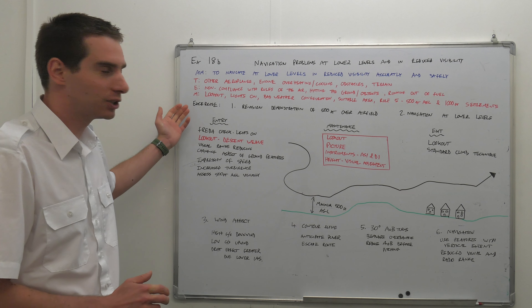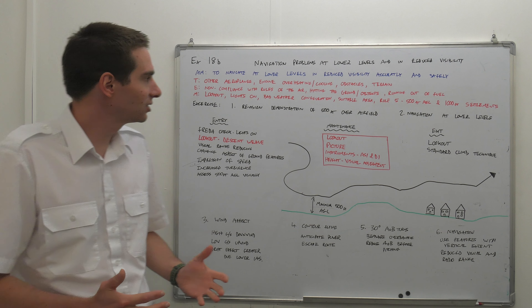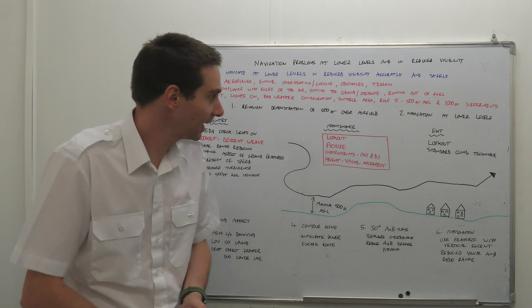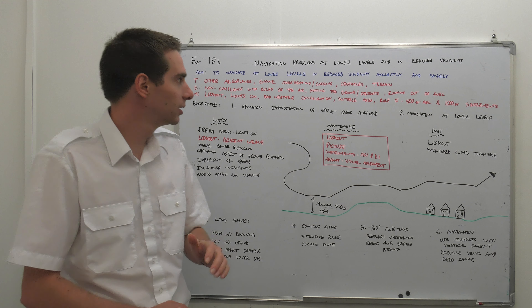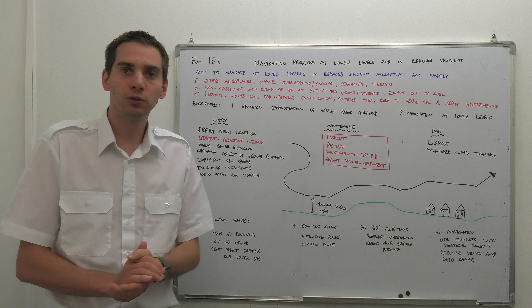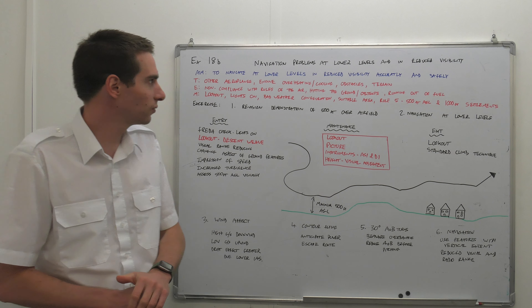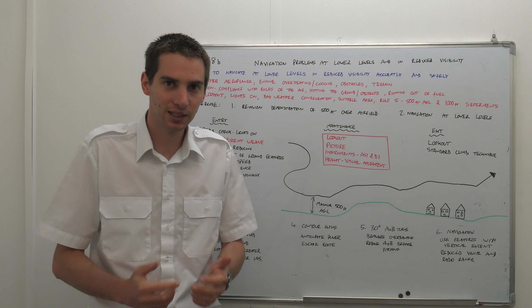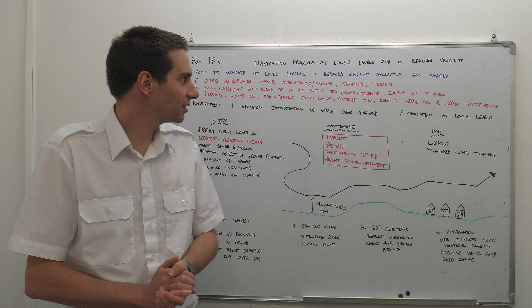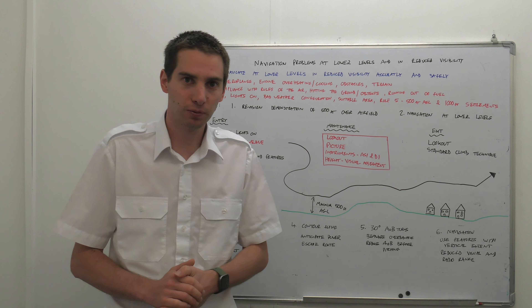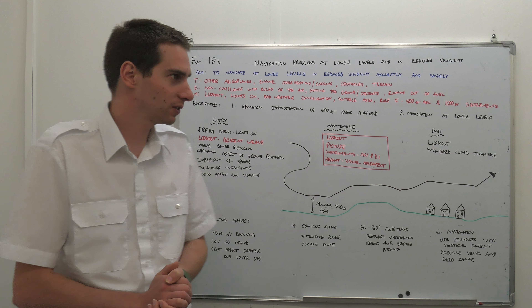Threat and air management: other airplanes, engine overheating and cooling, obstacles and terrain because we are going to be flying closer to the ground. Areas we can make errors include non-compliance with rules of the air, hitting the ground and objects, and running out of fuel if we are pushing the aircraft.